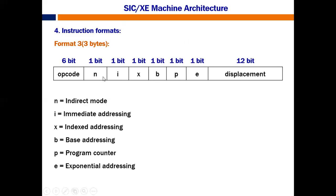N stands for indirect mode. I stands for immediate addressing. X is for indexed addressing. B is for base addressing. P is for program counter. E is for extended format. Since it is a format 3 instruction, E will be taken as 0.